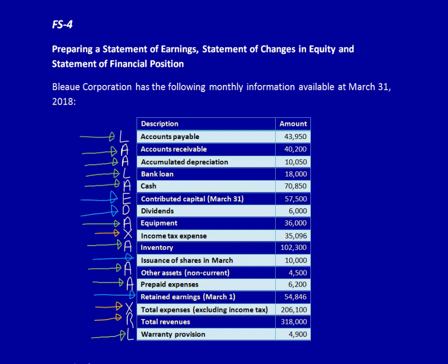Accounts payable will be settled within the next 12 months — it's a current liability. Accounts receivable, the legal right to collect cash from our customers, will also be settled in the short term. Accumulated depreciation represents the use of the equipment; equipment is a non-current asset and therefore accumulated depreciation is also. The bank loan is not denoted as either current or non-current — I always assume that bank loans, unless specifically stated, are non-current. Cash is a current asset. Equipment is a non-current asset. Inventory is always a current asset. Other assets are non-current — they're already giving us that information. Prepaid expenses, which is when we pay an expense in advance of having used or consumed it, is a current asset unless indicated otherwise.